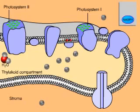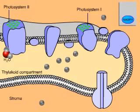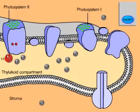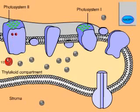Electrons leaving this electron transport chain enter photosystem 1, replenishing its lost electrons. Photosystem 2 replenishes its electrons by splitting water. Hydrogen ions and oxygen are released into the thylakoid compartment — this is where the oxygen gas generated by photosynthesis comes from.